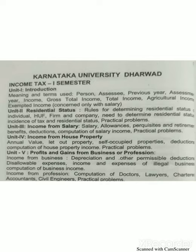The last unit is a combination of business and profession — profit and gain from business or profession. The first subhead is income from business: depreciation and other permissible deductions, disallowable expenses, income and expenses of illegal business, and computation of business income. The second subhead is income from profession: computation for doctor, lawyer, CA, civil engineers, and practical problems regarding income from profession.